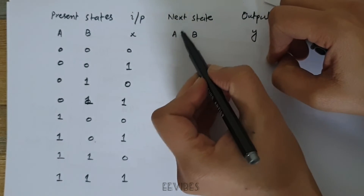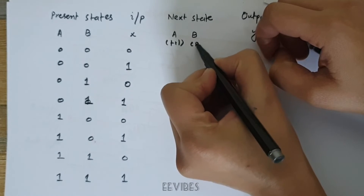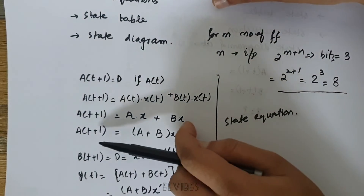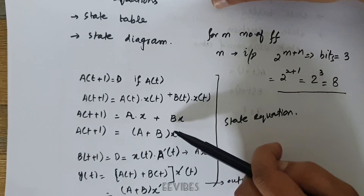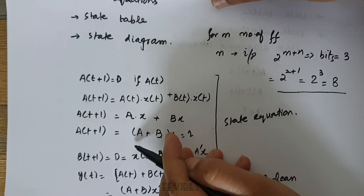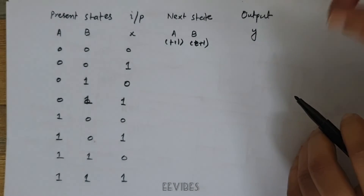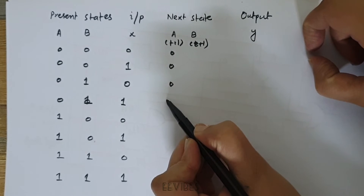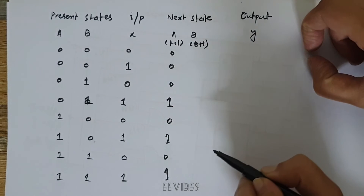The next step is to determine A(t+1) and B(t+1) from the state equations. A(t+1) = (A + B)·X, so this function generates an output of 1 only when X = 1 and either A or B equals 1. Looking at the table, the values for A(t+1) are: 0, 0, 0, 1, 0, 1, 0, 1. In this way we have filled in the next state of flip-flop A.